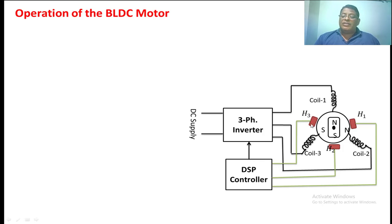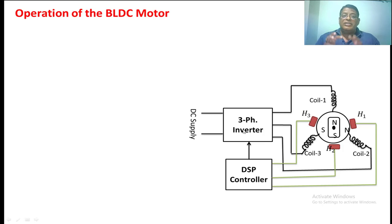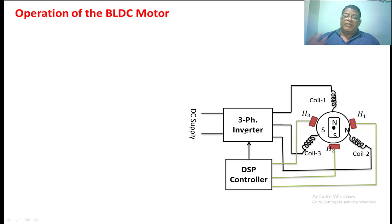The main function of these Hall effect sensors is to give information about the position of the rotor. Based upon that, the DSP controller generates a pulse through the 3-phase inverter. This inverter gives a pulse to the stator winding, where exactly the force will be created from the stator winding.